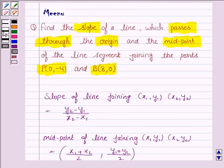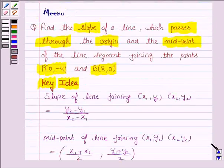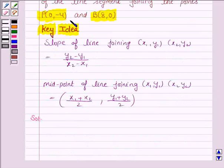So this knowledge will work as the key idea. Let us now proceed with the solution. We have to find the slope of the line which passes through the origin and the midpoint of the line segment joining these two points. So we first find the midpoint of the line joining these two points.